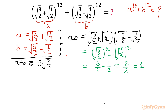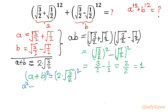Now I will consider the whole square of A + B = 2√(3/2). Squaring both sides: A² + B² + 2AB = 4 × (3/2). The right-hand side gives 4 × 3/2, and cancelling gives 6. Since AB = 1, we have 2AB = 2.